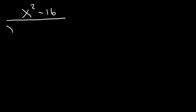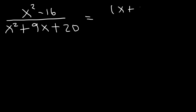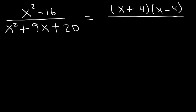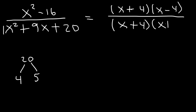Here's another example: x squared minus 16 divided by x squared plus 9x plus 20. Your goal is to factor completely and cancel. We can factor x squared minus 16 using the difference of squares technique — it's x plus 4 times x minus 4. For the denominator, we need two numbers that multiply to 20 but add to 9, which is clearly 4 and 5. So it's x plus 4 times x plus 5. We can cancel x plus 4, so the final answer is x minus 4 divided by x plus 5.